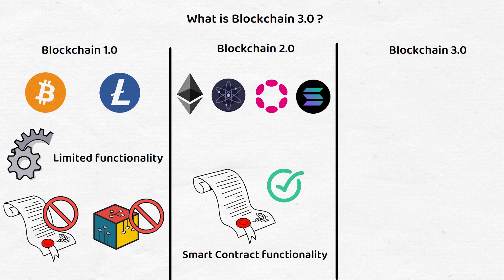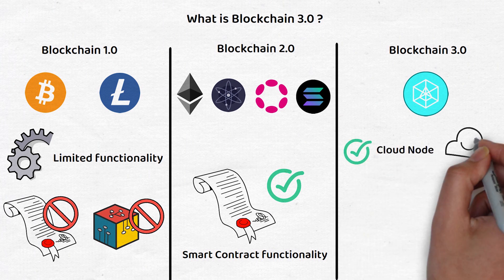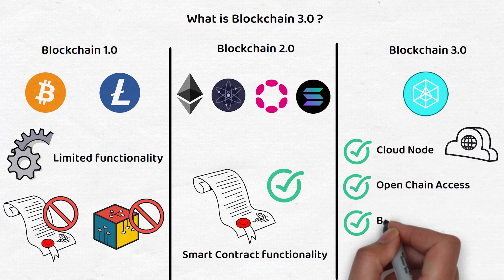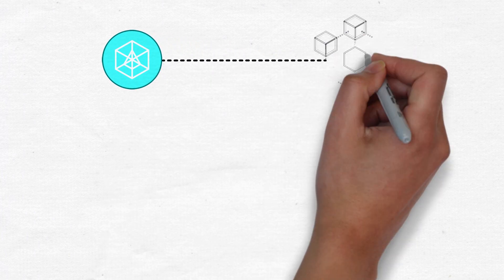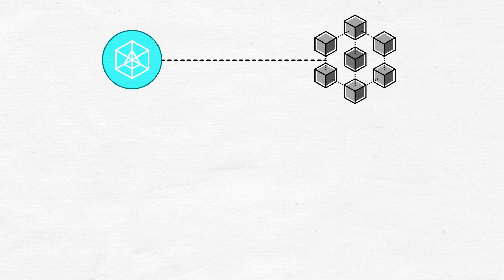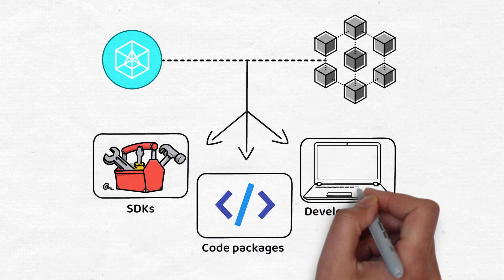Finally, Blockchain 3.0 is where we find ArcBlock. ArcBlock has labeled this generation as a generational leap above Blockchain 2.0 due to features such as cloud node, open chain access, blocklet, and incentive for self-evolution. ArcBlock gives the foundational components necessary for building blockchain applications. This can include products such as software development kits, code packages, developer tools, and more.